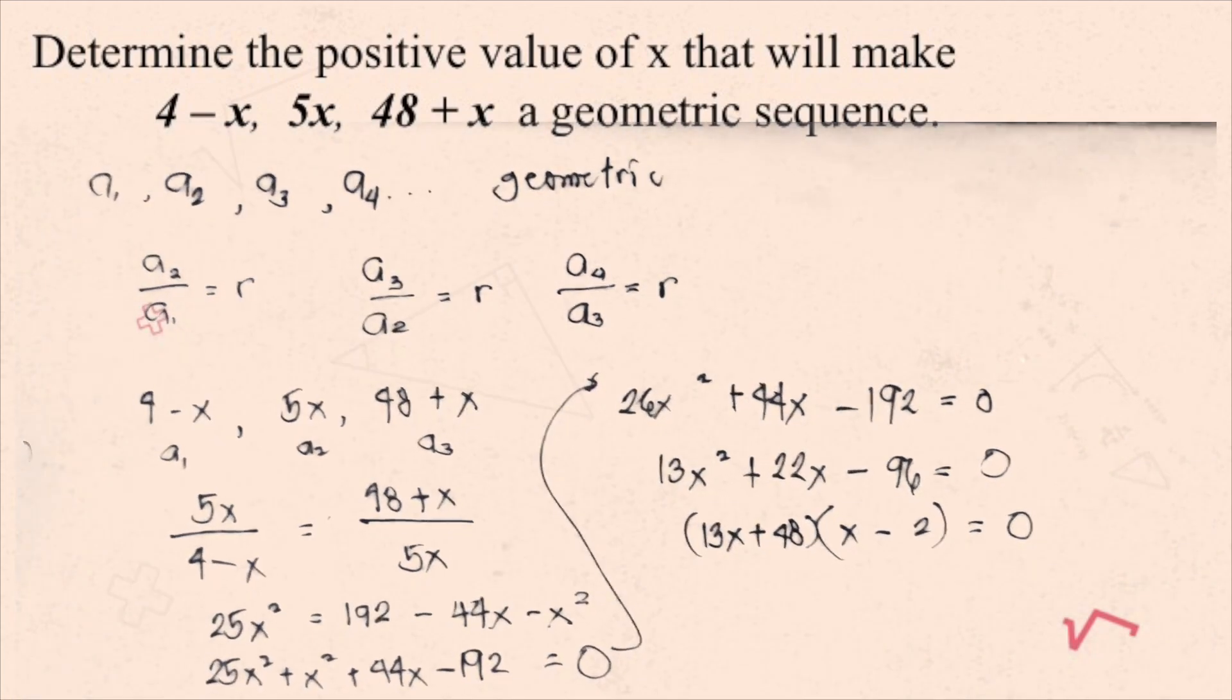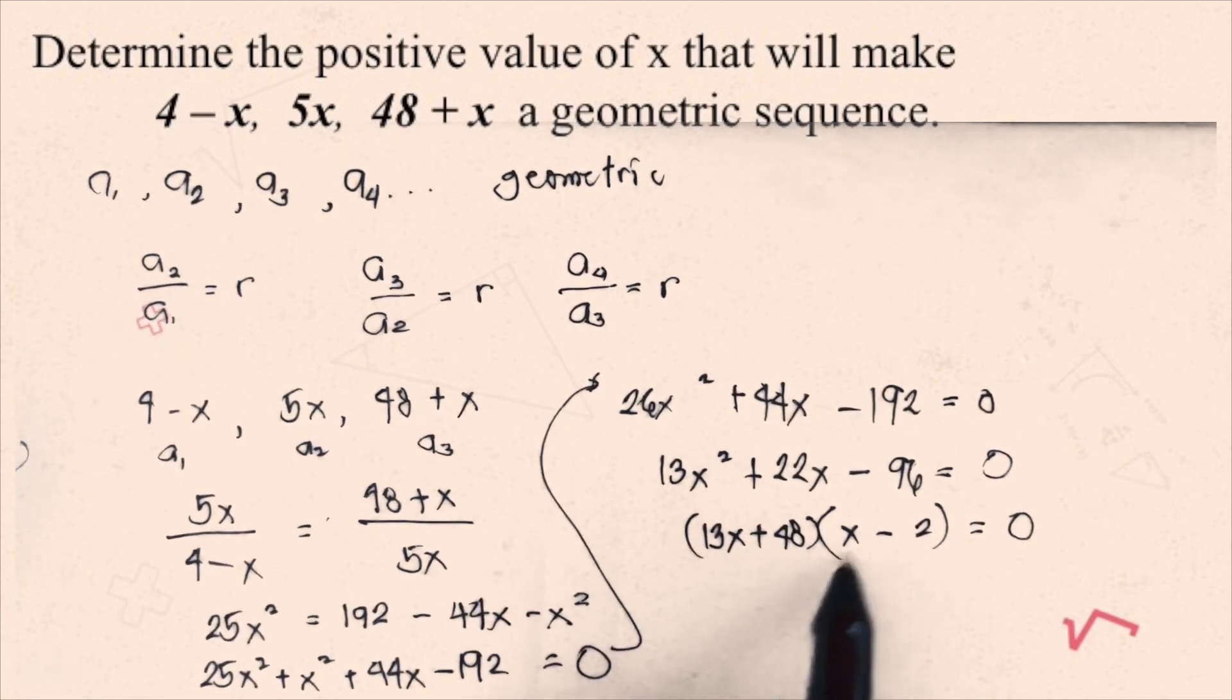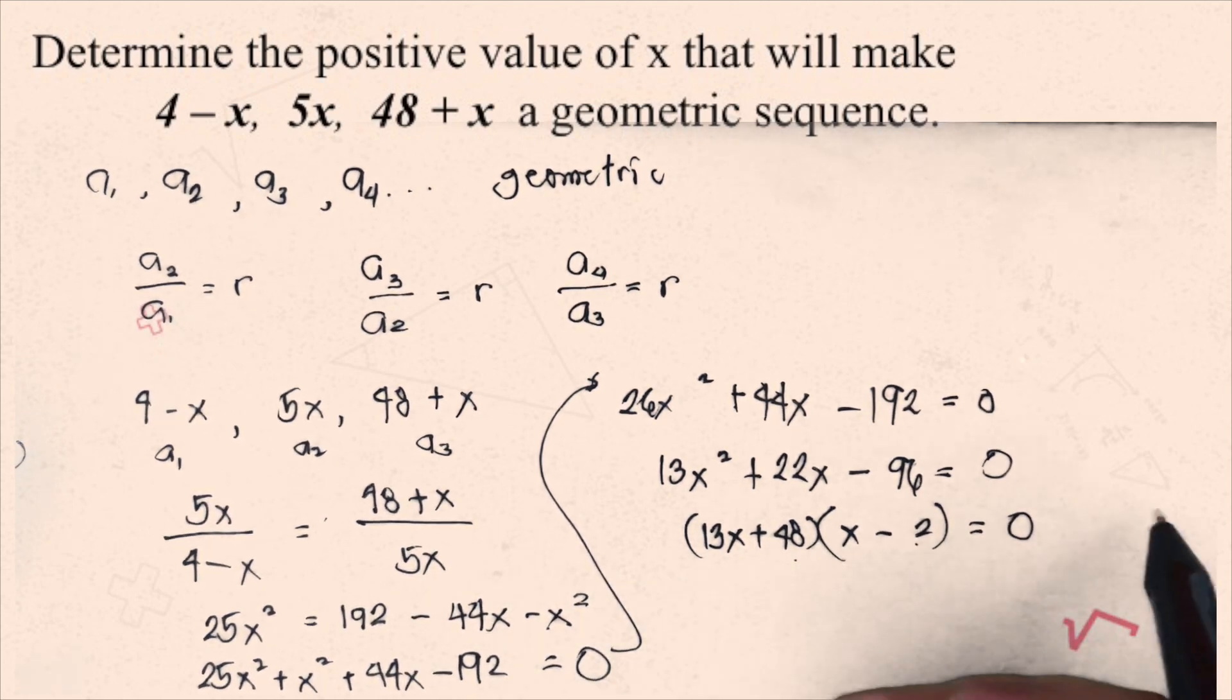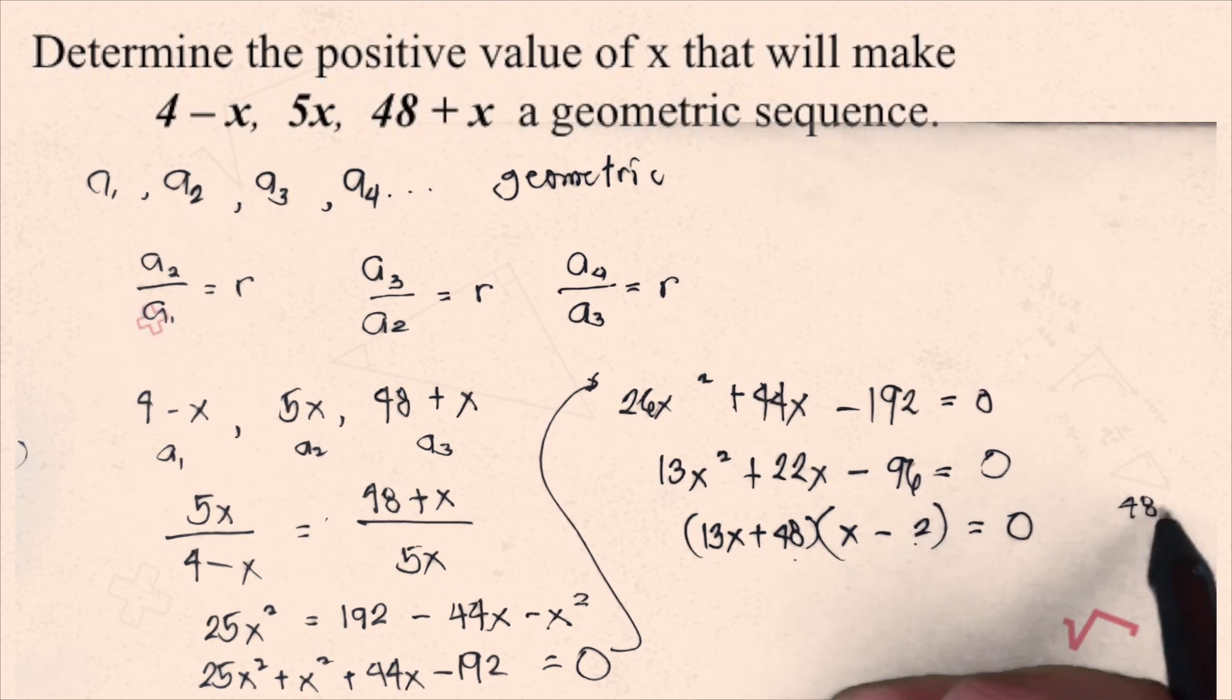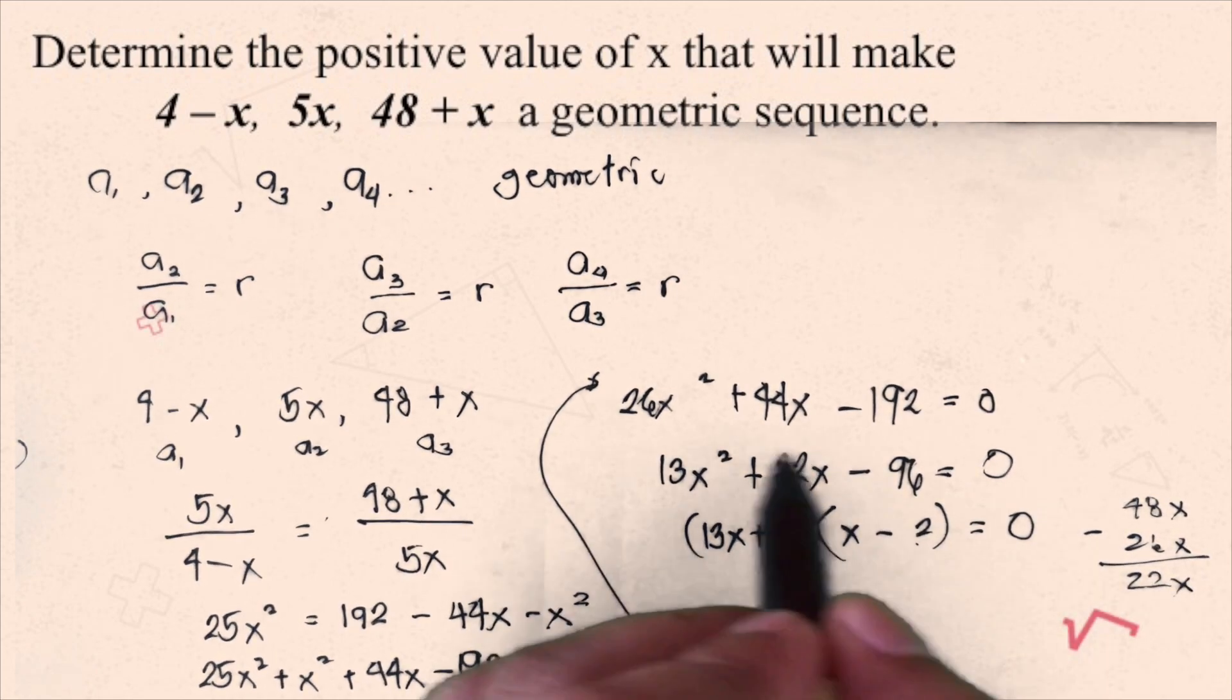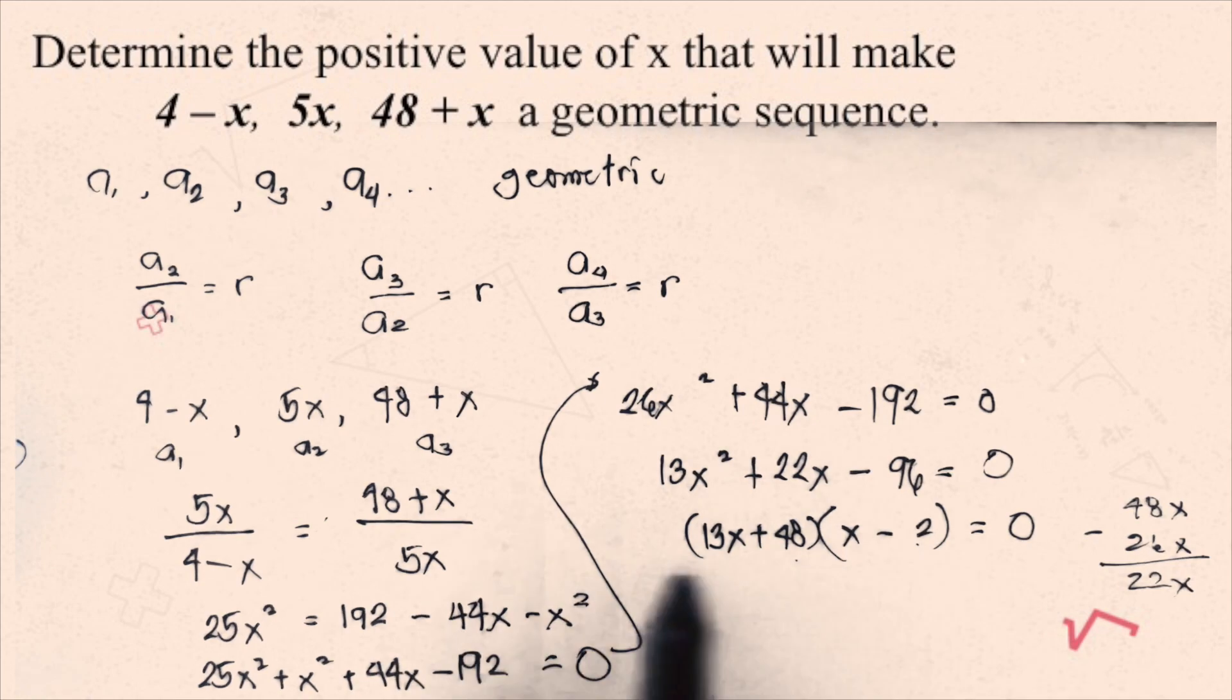Okay, let's see, 48 times x is 48x, then this is positive 13x times negative 2 is negative 26x. 48x minus 26x is 22x. Okay, so we have 22x, so this one is correct.